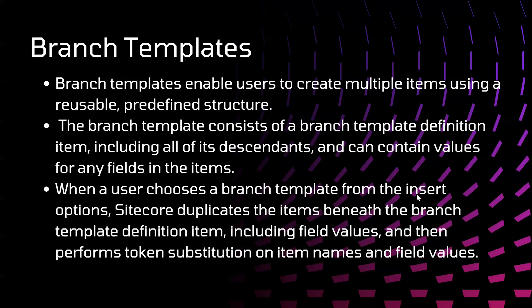If we want to create multiple items from a single item or in one click, we generally choose branch template. A branch template consists of a branch template definition item including all the descendants, and can contain the values for any field in the item. Branch template will contain the definition of that item for all descendants and all the values for those particular items.